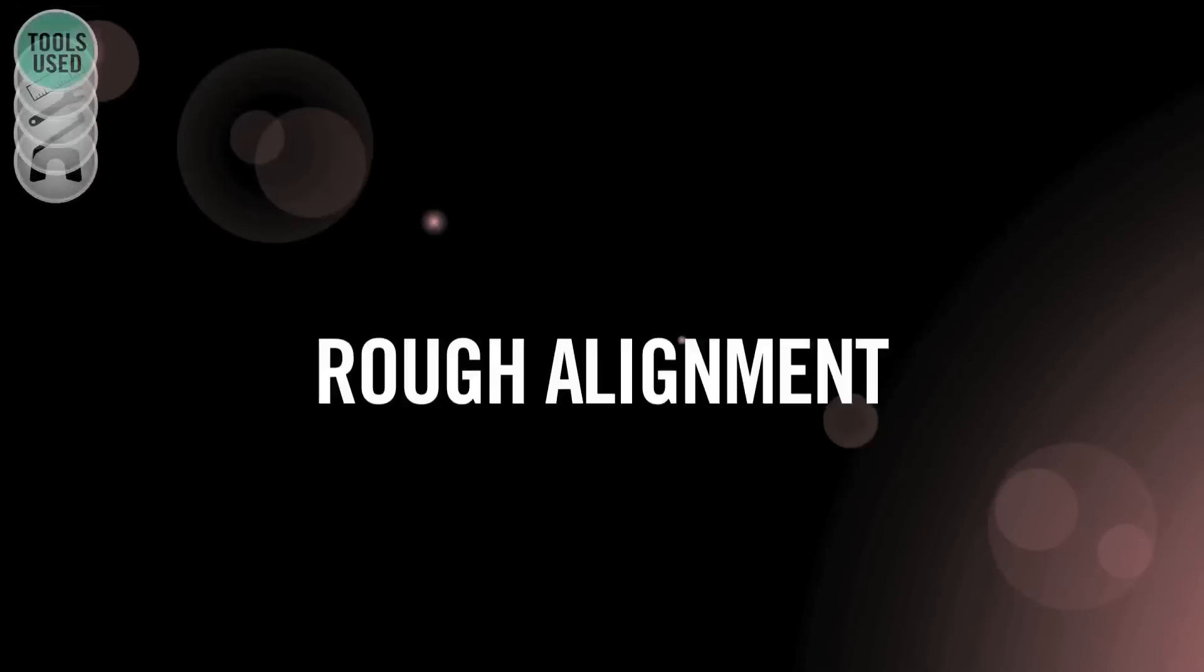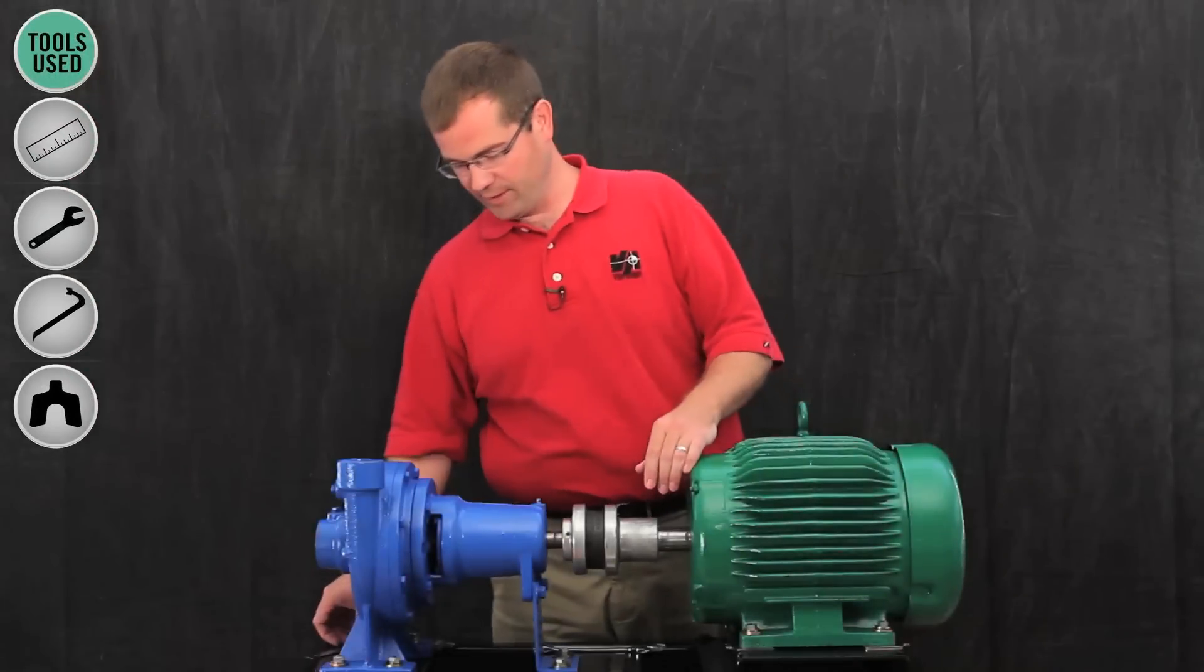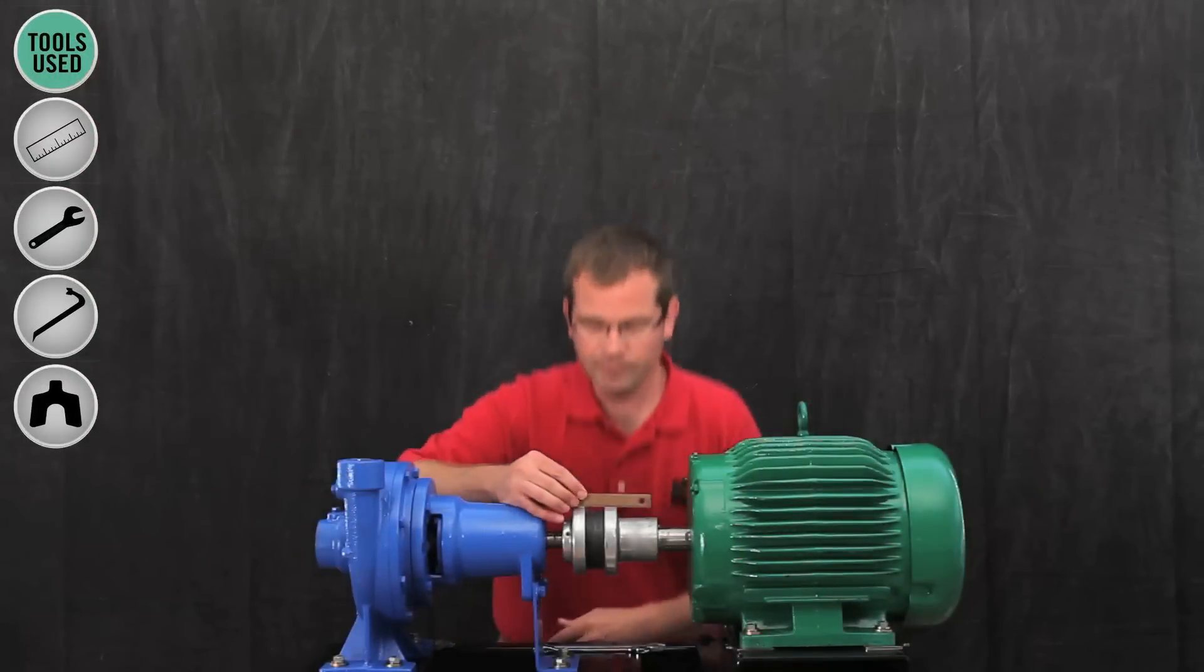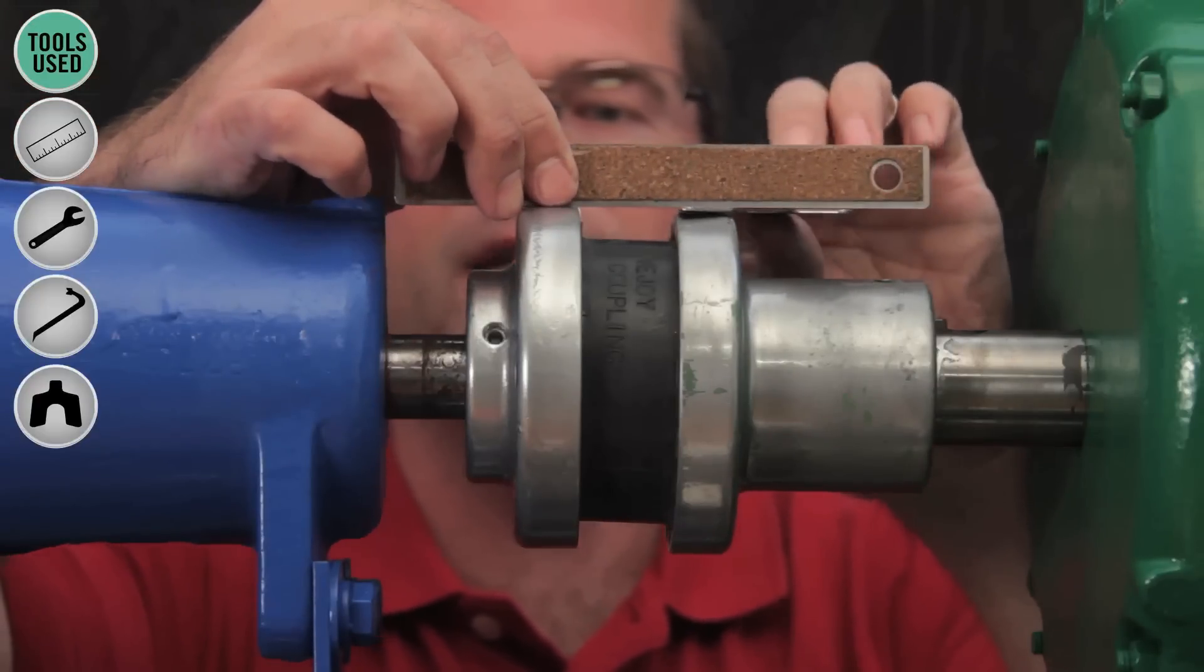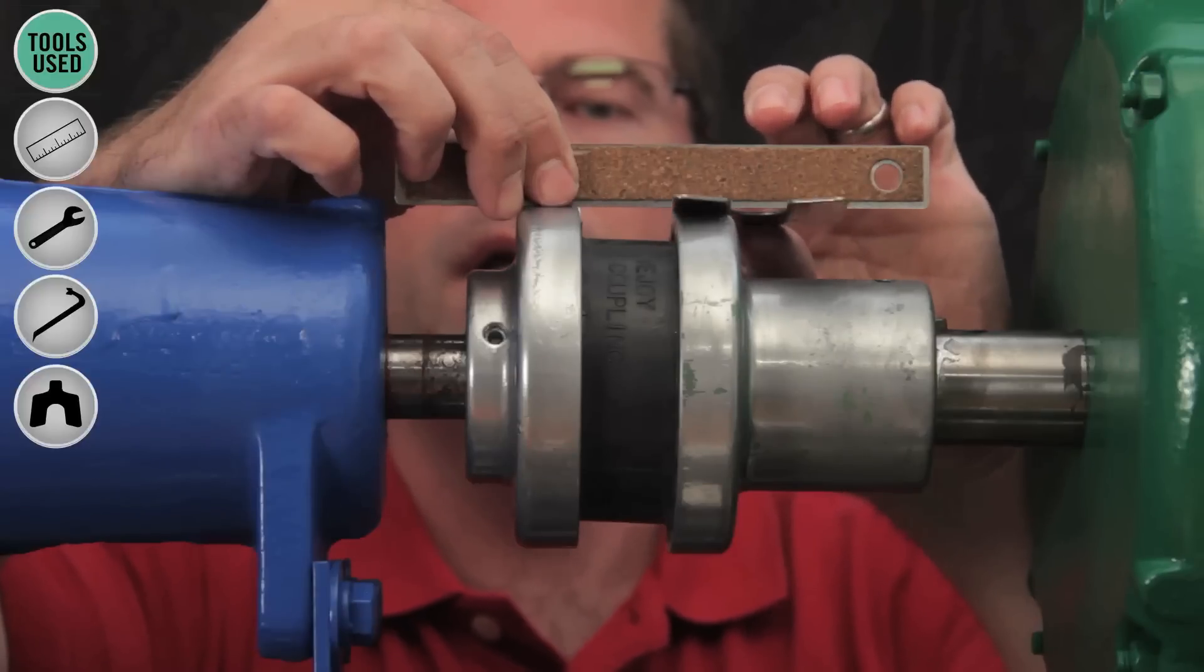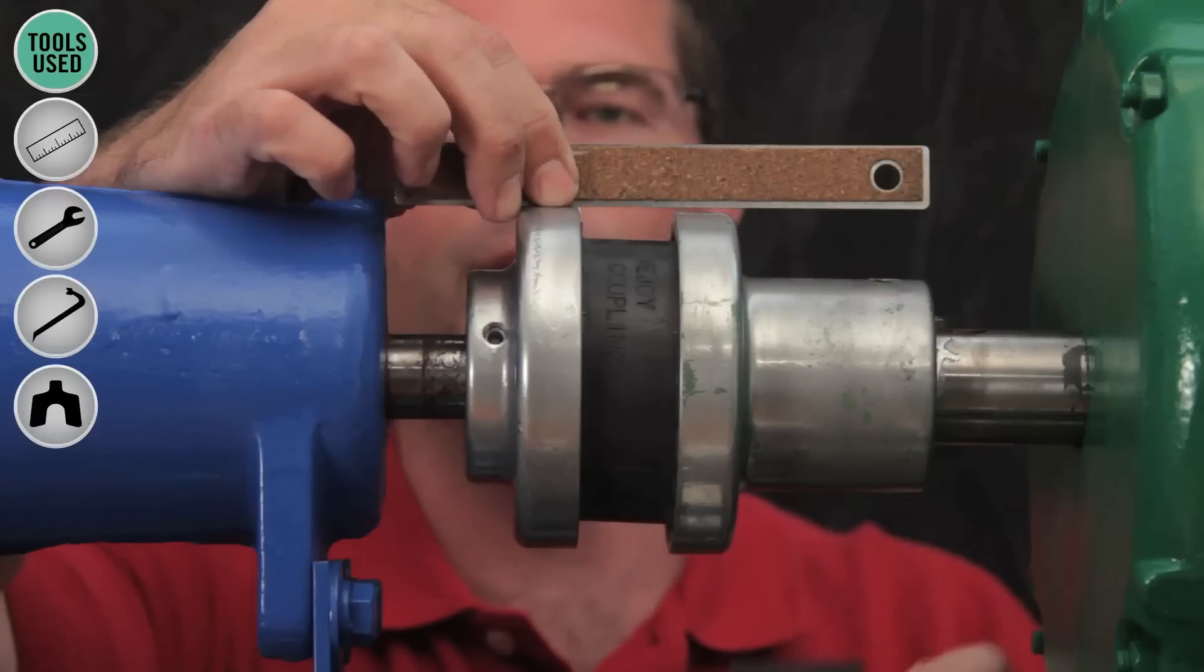The first step in pre-alignment is to rough align the machine shafts. I'm going to do that with a straight edge. I have a 50,000 shim here. I've got my straight edge on top of the pump and that 50,000 shim drags just a little bit.